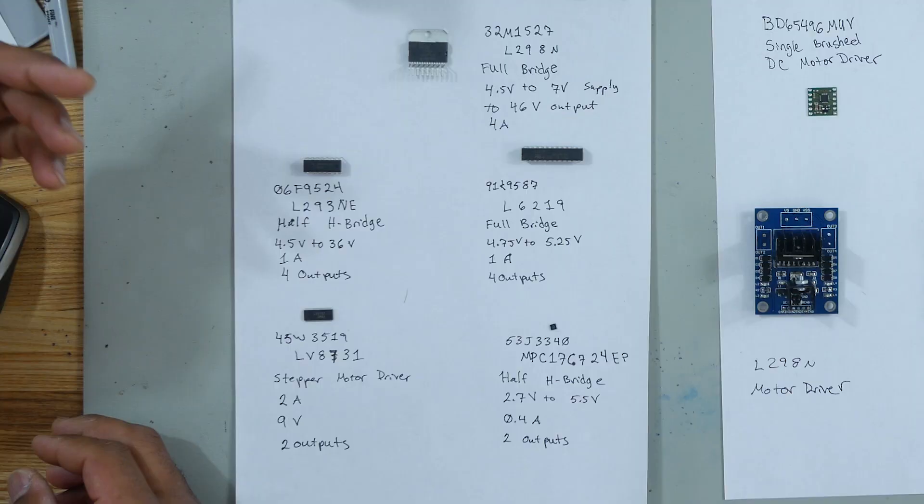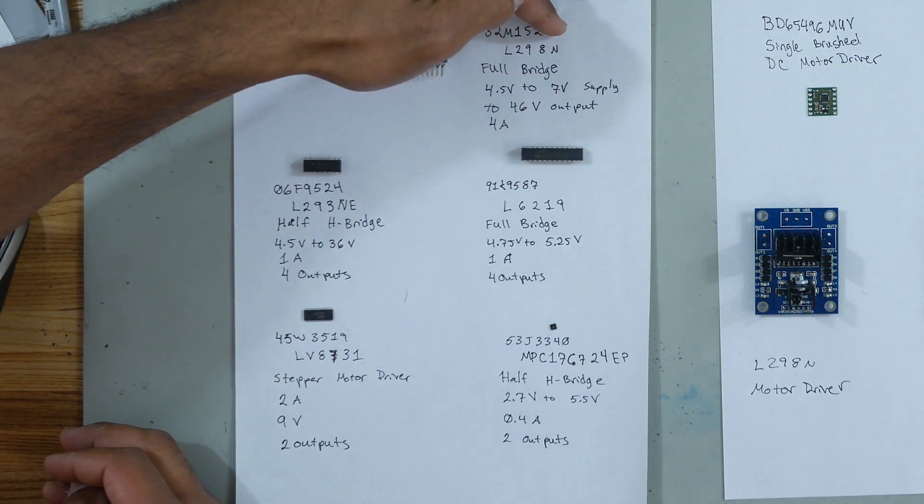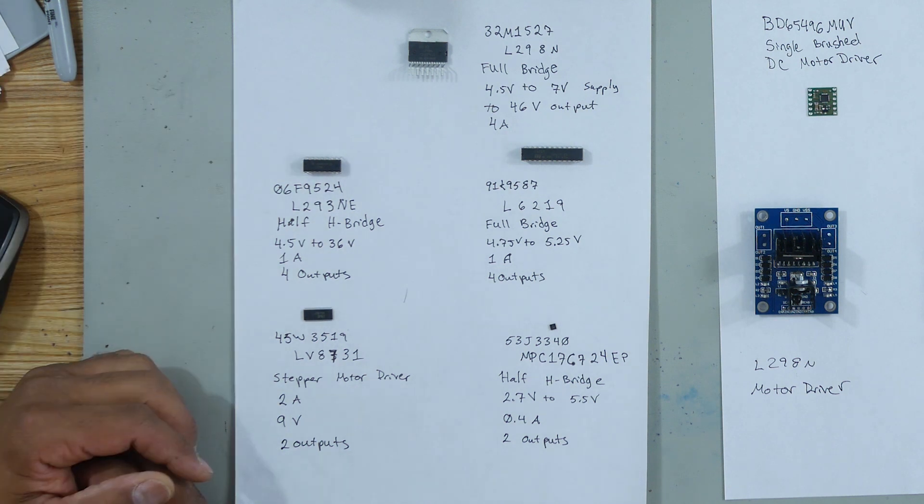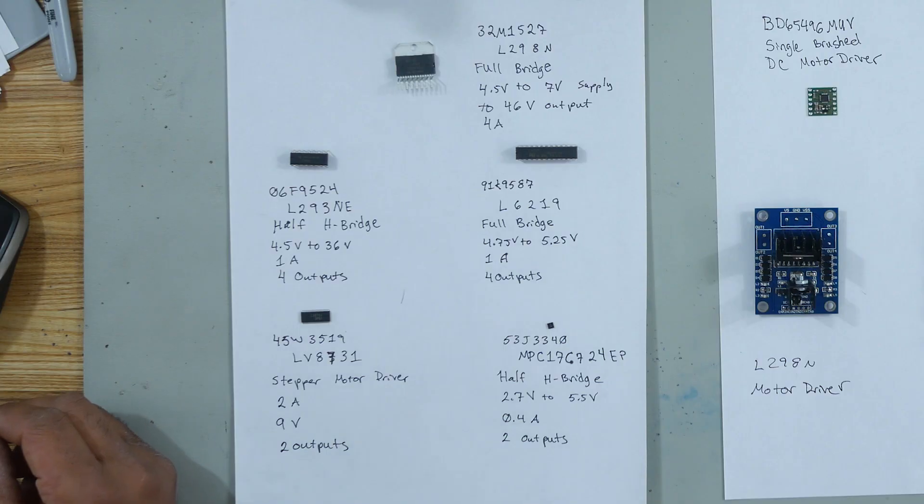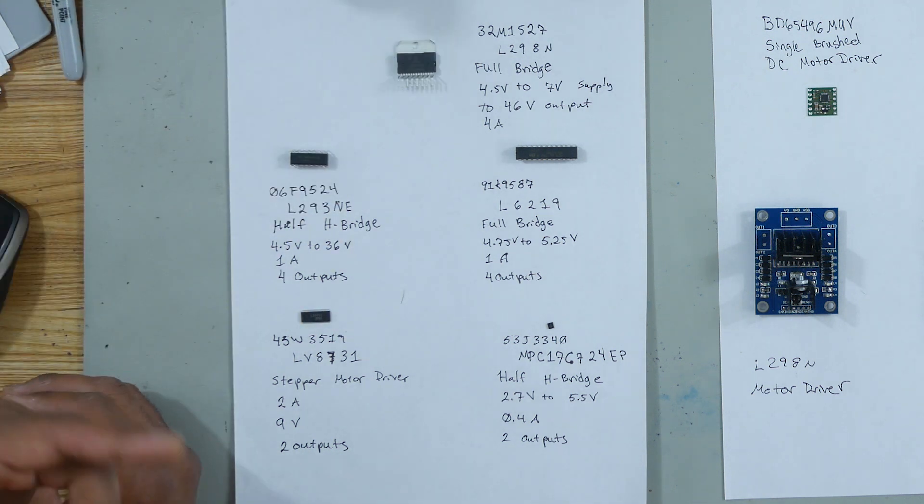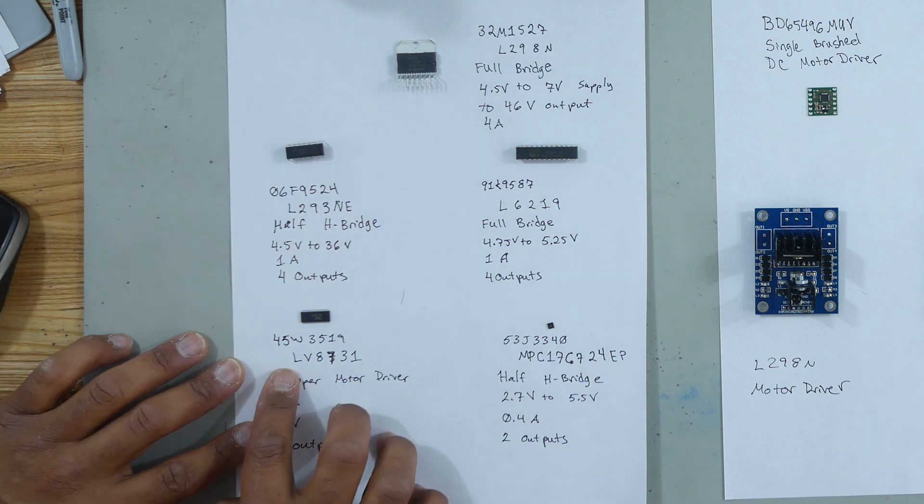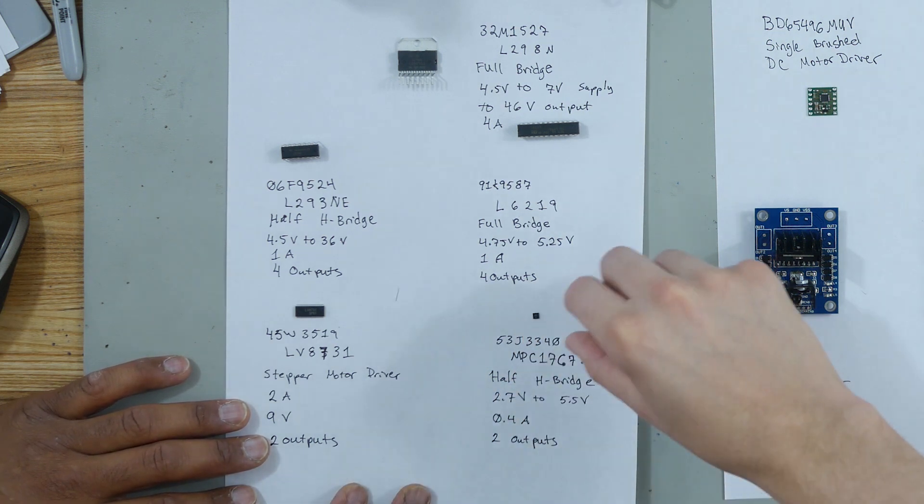However, I would like to present to you and the audience a variety of packages that we could get from Newark. The L298N, it's a full H-bridge. It goes from 4.9 volts to 7 volts. That's the supply voltage which controls the logic. But then it can actually drive up to 46 volts at 4 amps. An example of where you'd want to use that is if you're going to have something that can pull up to 4 amps. You could go up to 46 volts with it. This is a pretty hardy motor driver right there. Then there is the L293NE, it's a half H-bridge. It has 4.5 to 36 volts, it could drive 1 amp. This is a through-hole component.